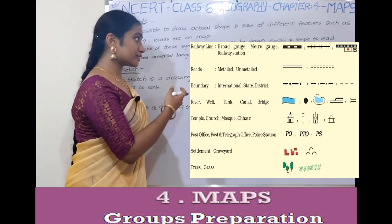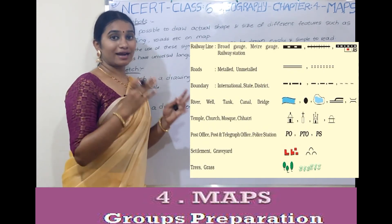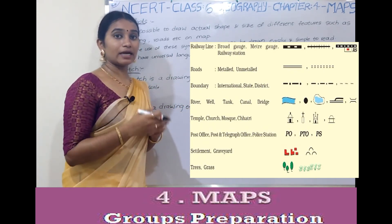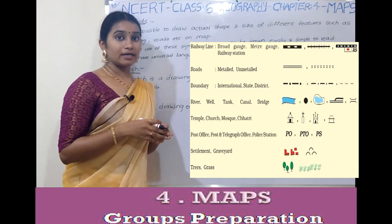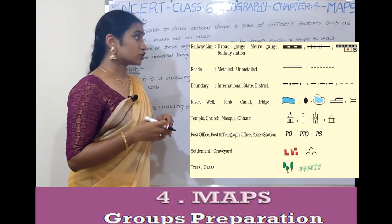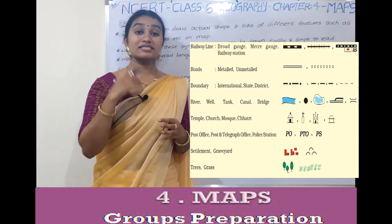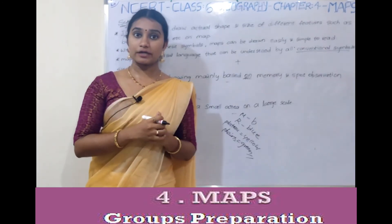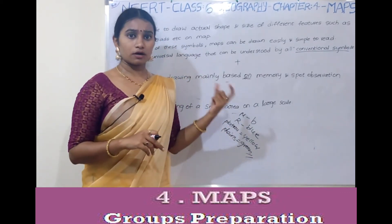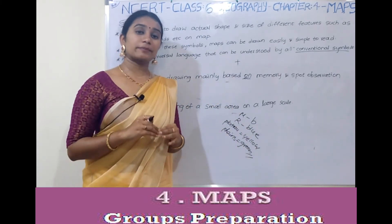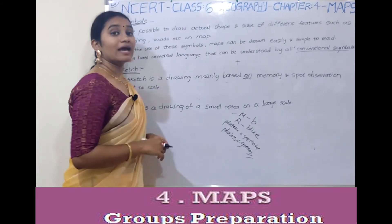These are some of the symbols — railway lines, metallic and unmetallic roads, church, mosque, temples, graveyard, plains, and trees. We can choose symbols. There is also an international agreement on symbols. Maps are a universal language.